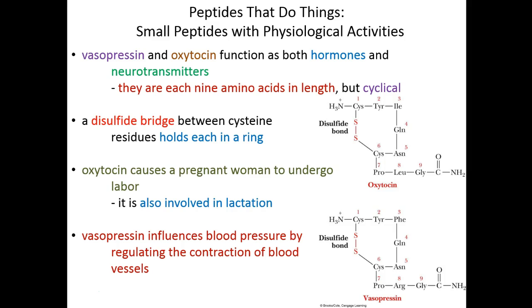Vasopressin, although very similar in shape and structure, has a completely different role. It regulates blood pressure by regulating the contraction of blood vessels. Some blood pressure medications are vasopressin inhibitors causing vessels to dilate and have lower pressure. Vasopressin is also an antidiuretic—it makes you pee less and retain more water.